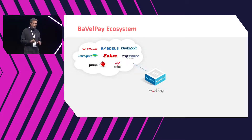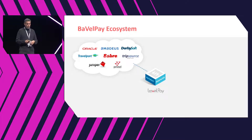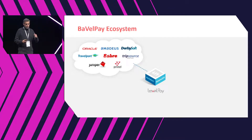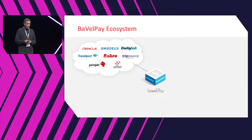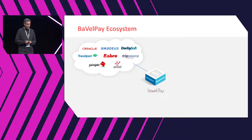We have a very significant ecosystem of partners across four groups. Starting with technology players, we have connectivity across the full spectrum of the online distribution channel: PMS systems, CRSs, and connectivity to the three major GDS systems in the world. We also have connectivity with online booking tools like TripSource, switches, and hundreds of channel managers and PMS systems — literally over a hundred different connectivities already in place.